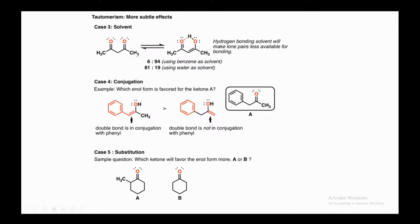The third factor is the solvent effect. For the same 1,3-diketone functionality, using benzene as a nonpolar solvent gives approximately a 6:9 ratio favoring the enol form, because hydrogen-bonding solvents make lone pairs less available for bonding. Using water as a polar solvent makes the keto form more stable and the enol form less stable. So nonpolar solvent favors enol; polar solvent favors keto.